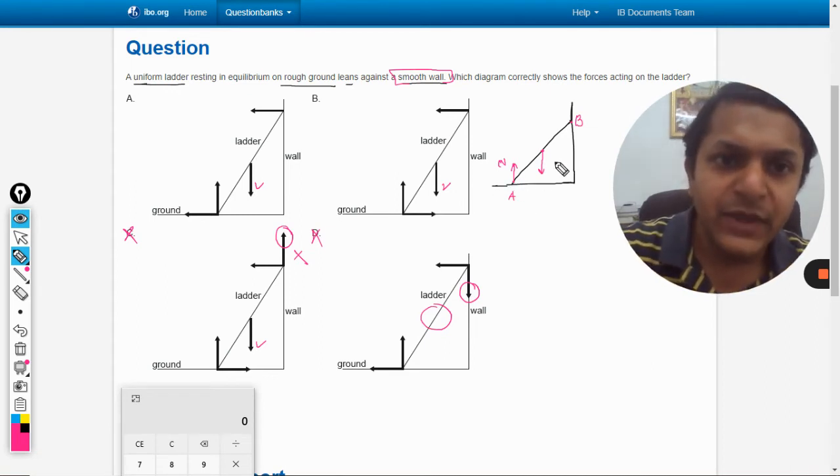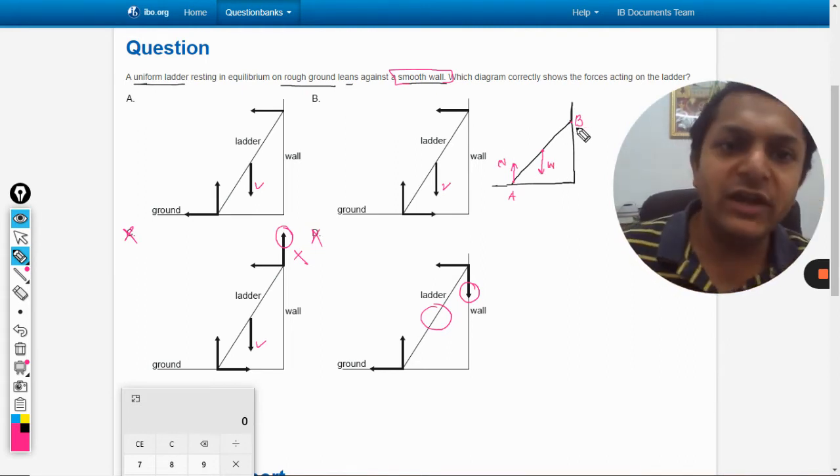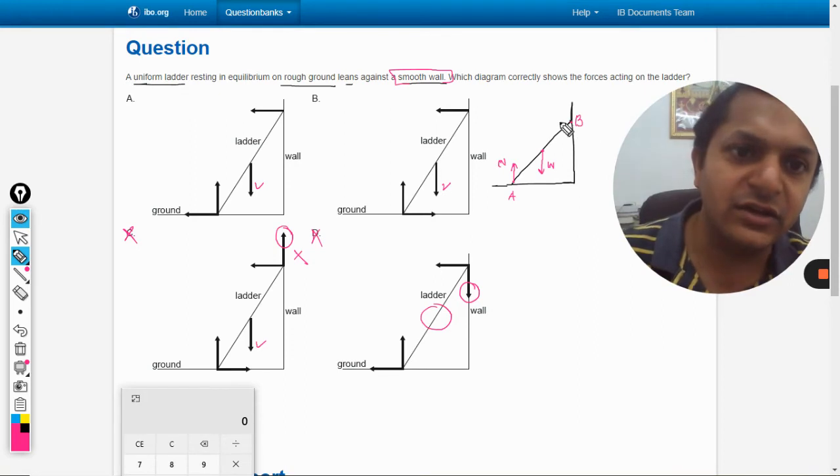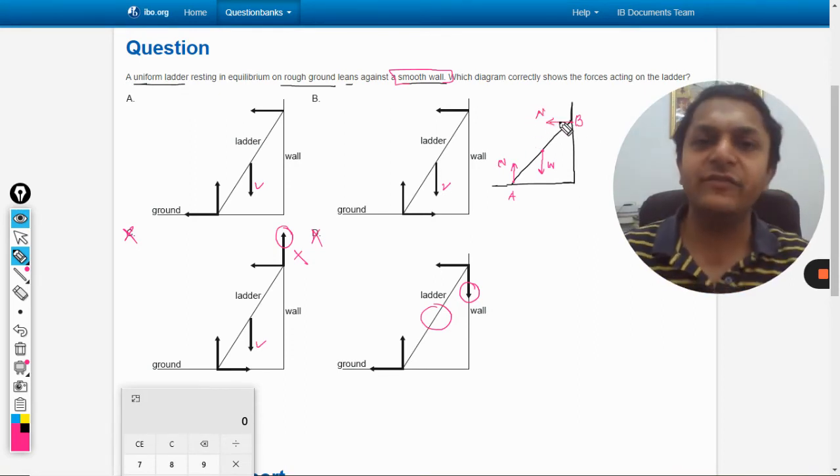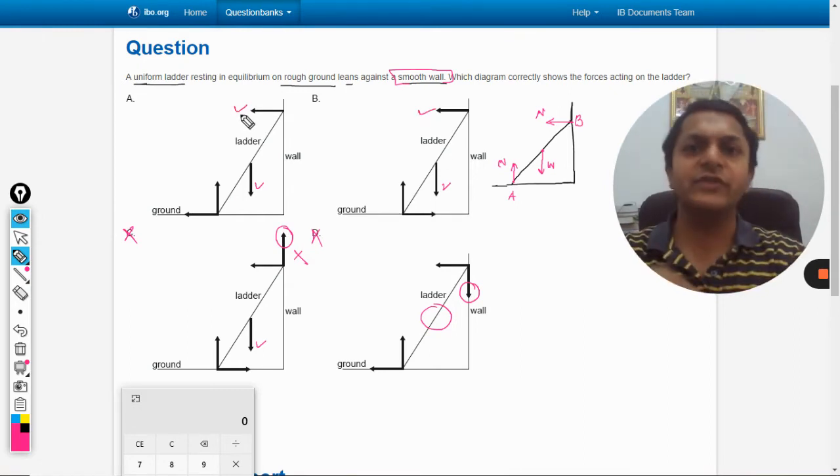Now, the upward force will be this only. But when this force, that is the weight, is pulling it down, so definitely it is trying to push this thing here. So there will be a reaction which will be in this direction. There will be a horizontal reaction. This horizontal reaction is shown in both of the options.